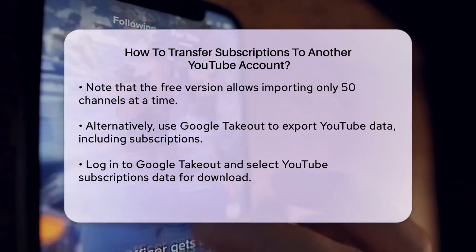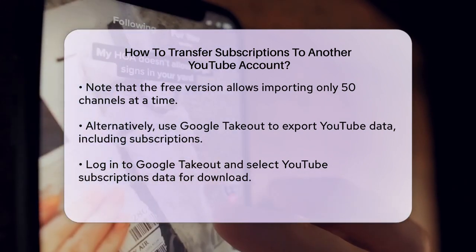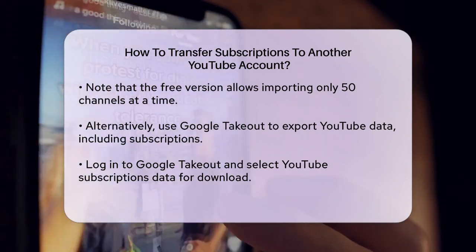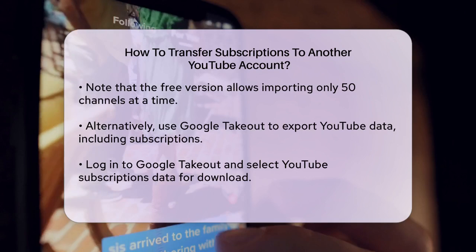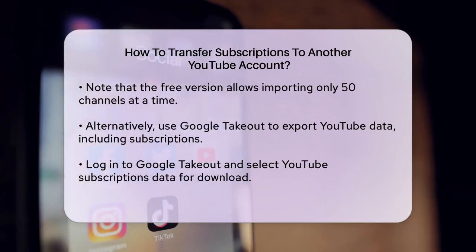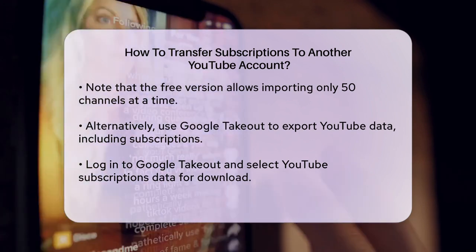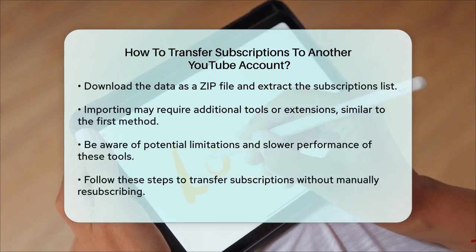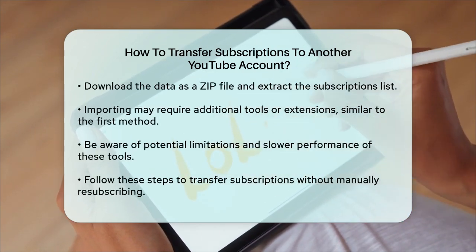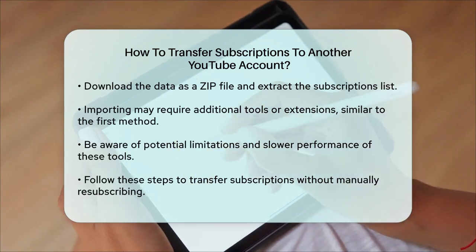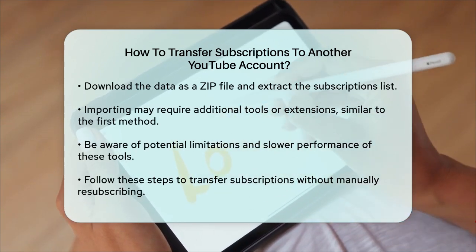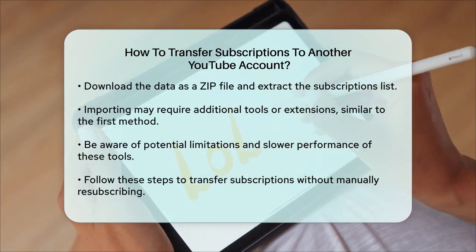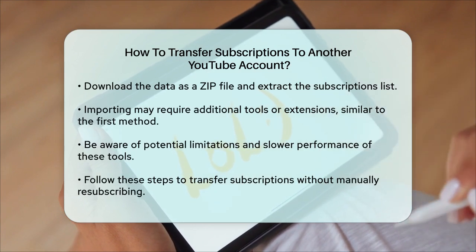Another method involves using Google Takeout to export your YouTube data, including your subscriptions. Go to the Google Takeout page, log in with your current Google account, and select only the YouTube subscriptions data. You can then download this data as a zip file and extract the subscriptions list. However, this method also requires using a browser extension or tool to import the subscriptions into your new account.